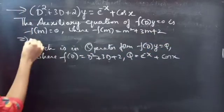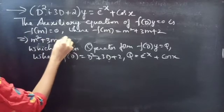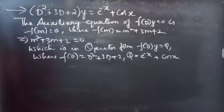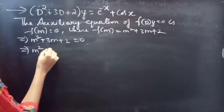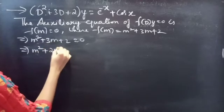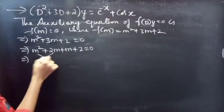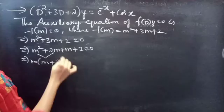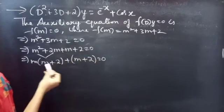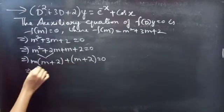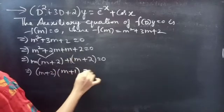Our auxiliary equation becomes m² + 3m + 2 = 0. Now we need to find the roots. Split 3m as 2m + m: m² + 2m + m + 2 = 0. Take m common from the first two terms: m(m + 2) + (m + 2) = 0. Notice we have (m + 2) in both terms, so take (m + 2) common to get (m + 2)(m + 1) = 0.